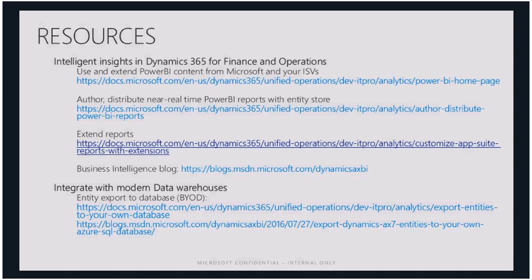For financial reporting, what comes out of the box uses main accounts and main account categories, and of course it can be customized for your specific dimensions. The business intelligence area is one where more and more is being added — there's the BI team blog where they announce things, and that was one of the first places the Entity Export to Database feature was announced. Now there's a help topic for it as well.